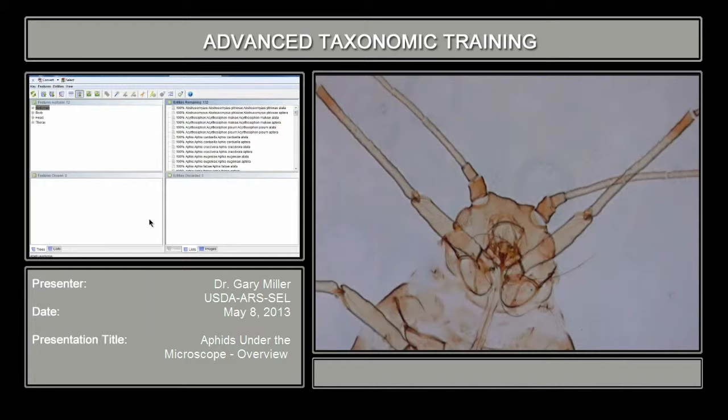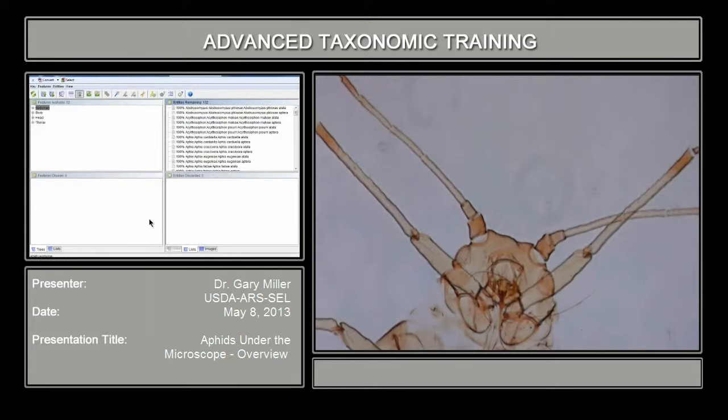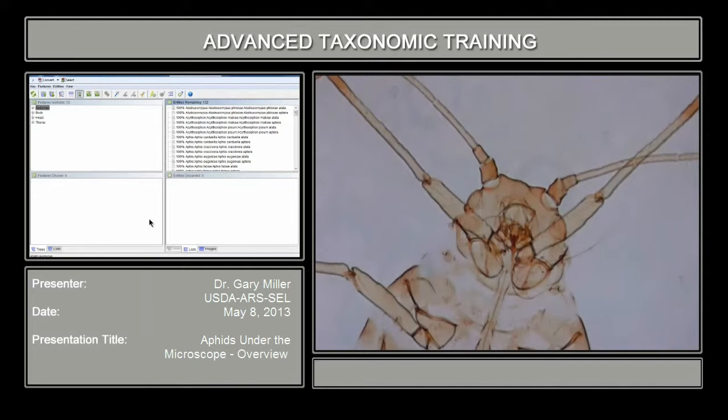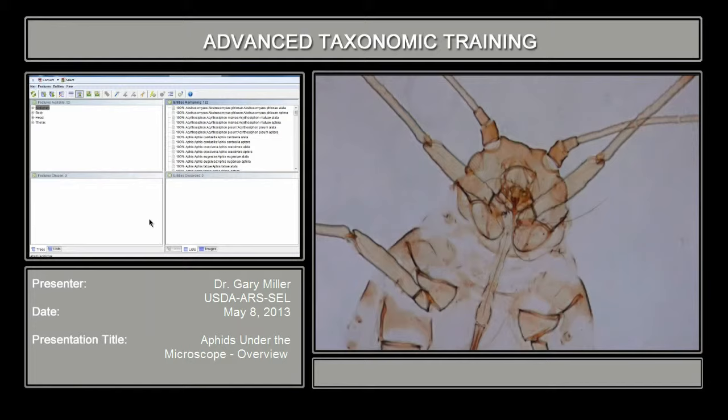Preliminary IDs can be made through a dissecting scope, but as we have here on the screen, this is a specimen — this is Aphis gossypii — and what I wanted to do was show you some structures on this aphid that are going to be critical, not only in a lucid key, which we're going to go through in just a few minutes, but also through a traditional paper key.